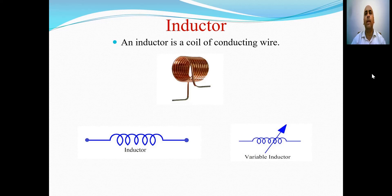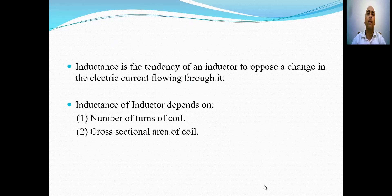The symbol for inductors is as shown in the slide. The first is the symbol for a fixed inductor and the second is the symbol for a variable inductor. Inductors are basically used to oppose any change of current passing through them — that is, inductors are used to provide a constant current.